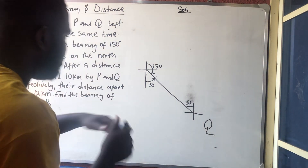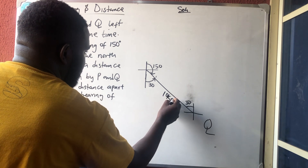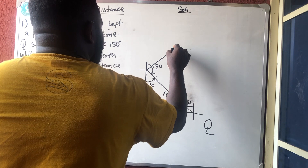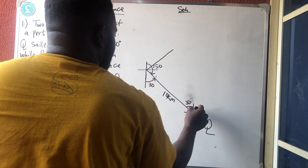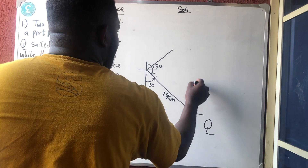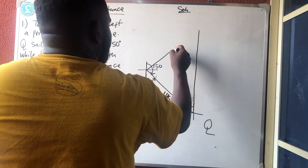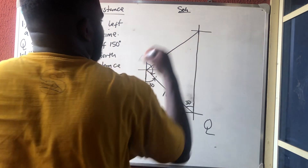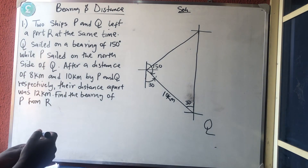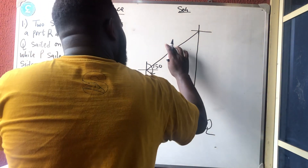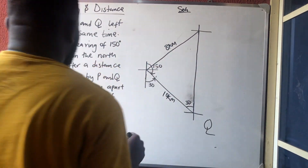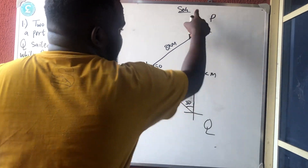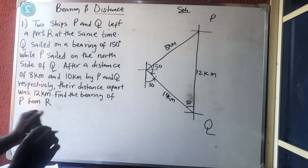The distance P moved is shorter than the distance Q moves. Q travelled 10 kilometres, so Q is somewhere further out. This is the north side of Q. P is 8 kilometres, which is shorter. The distance between P and Q is given as 12 kilometres.